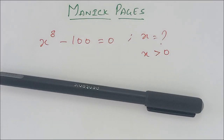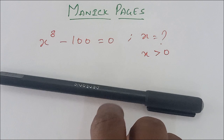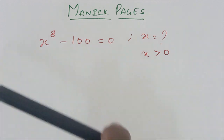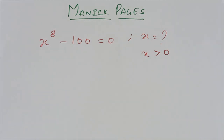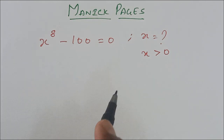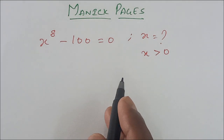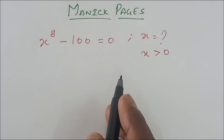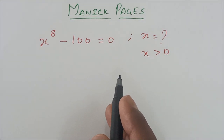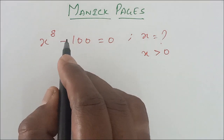Hello, welcome to Morning Pages. In today's page, a very interesting problem: x^8 minus 100 equals zero. Find the value of x, where x is greater than zero, meaning it's a positive number.